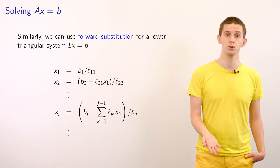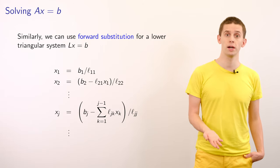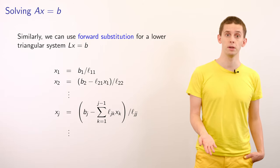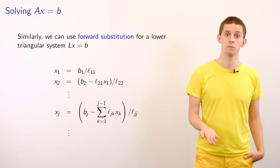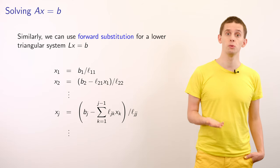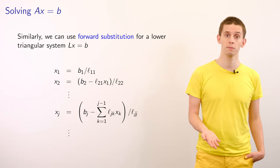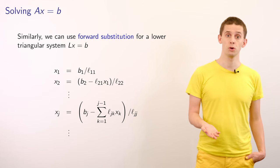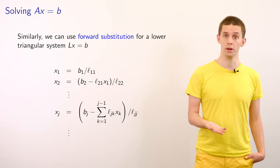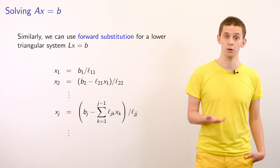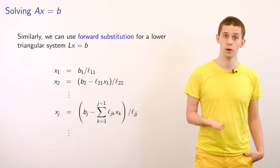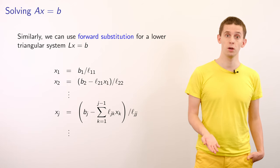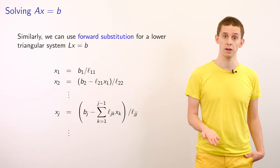Similarly, we can use forward substitution to efficiently solve lower triangular systems of the form Lx = B. The first row gives x_1 = B_1 / L_11. The second row gives x_2 = (B_2 - L_{21} * x_1) / L_22. Since we've already found x_1, we can directly evaluate x_2, and we continue in this fashion all the way down to x_n.